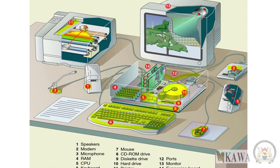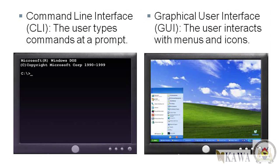We have the thirteenth, which is the monitor — the one you're using right now to view these training series. We have the expansion board, this cover that covers the central processing unit or the CPU. That shows us what hardware is — the things that you can touch and see.